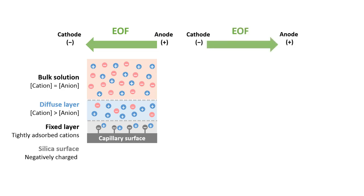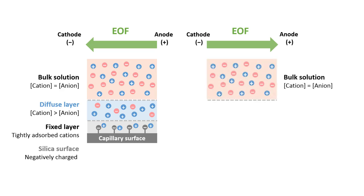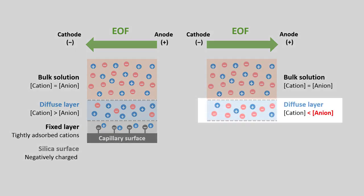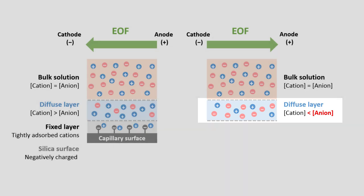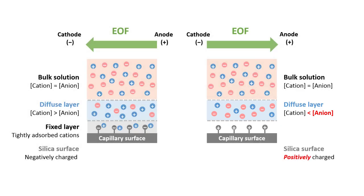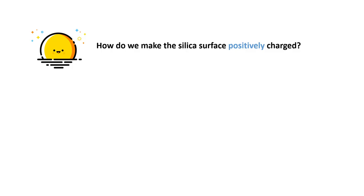Therefore, in order to reverse the electro-osmotic flow, we need to have a diffuse layer that is rich in anions so that it will be attracted towards the positively charged anode. To achieve this condition, the silica surface needs to be positively charged so that it can attract more anions in both the fixed layer and the diffuse layer. So the next question is, how do we make the silica surface positively charged?